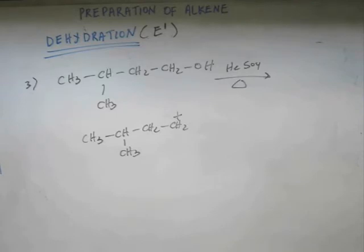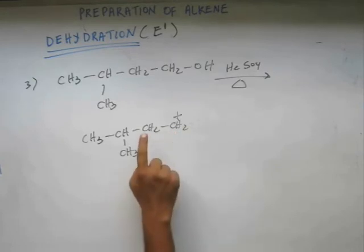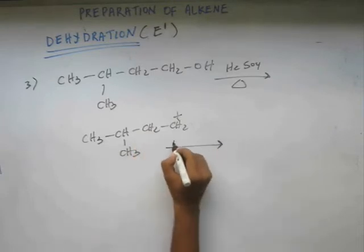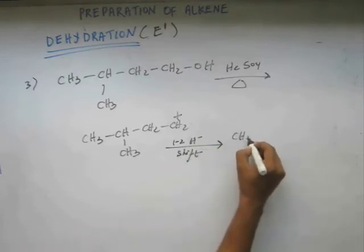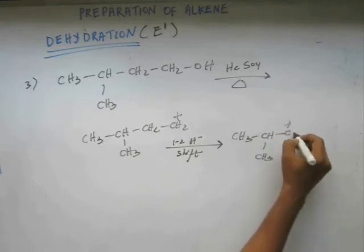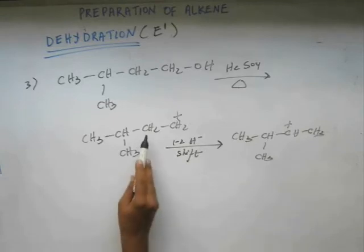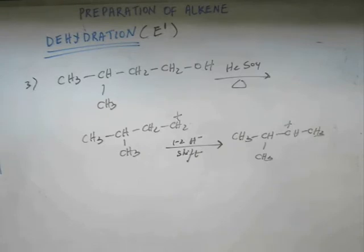We can obviously stabilize this carbocation because this carbocation is one degree. If we do one, two hydride shift, carbocation will come on this carbon and that will become two degrees. So let's do one, two hydride shift. And the rearranged carbocation would look like this. Previously it has two alpha hydrogen. Now it has four alpha hydrogen. So we have stabilized this carbocation.